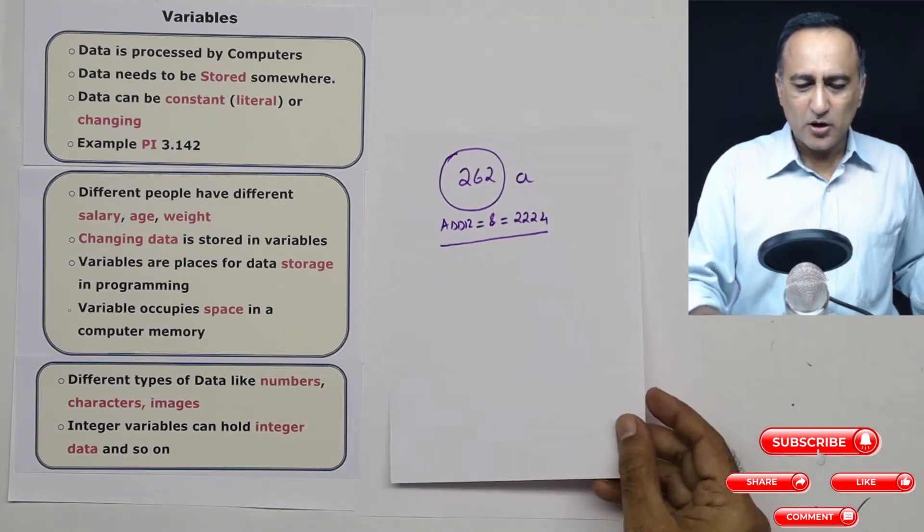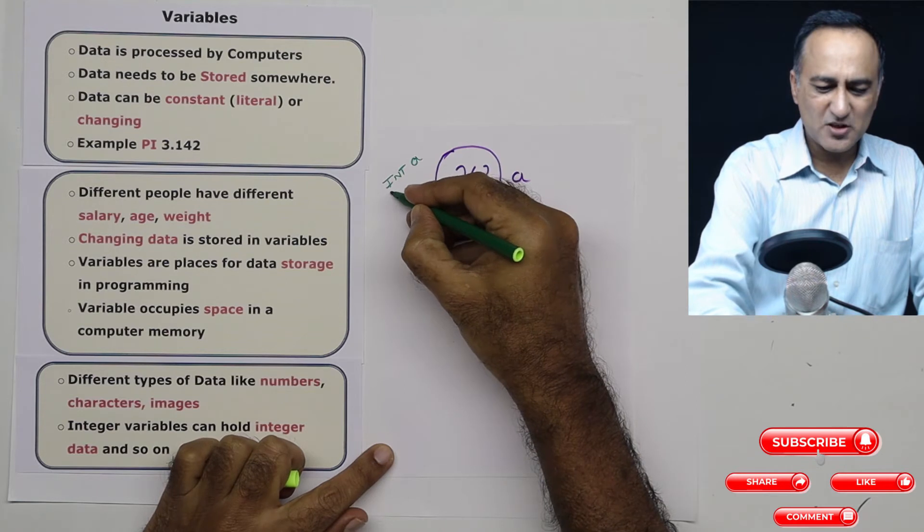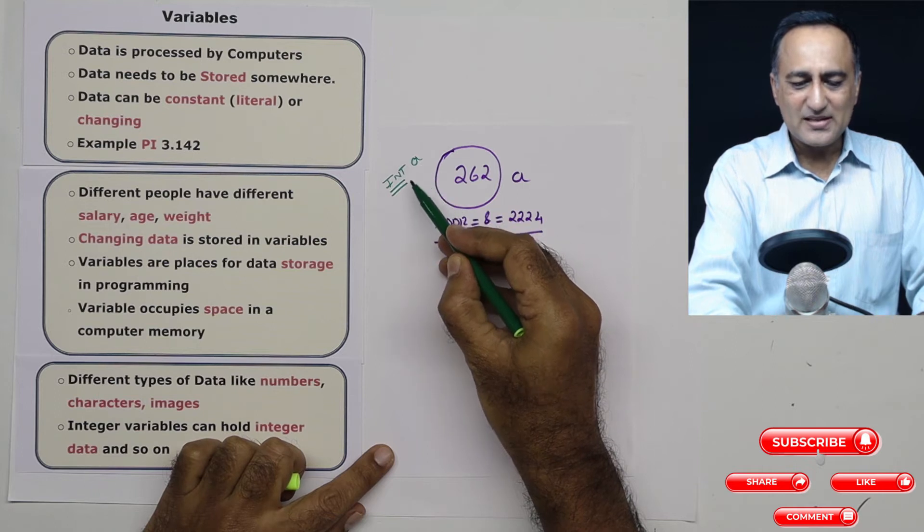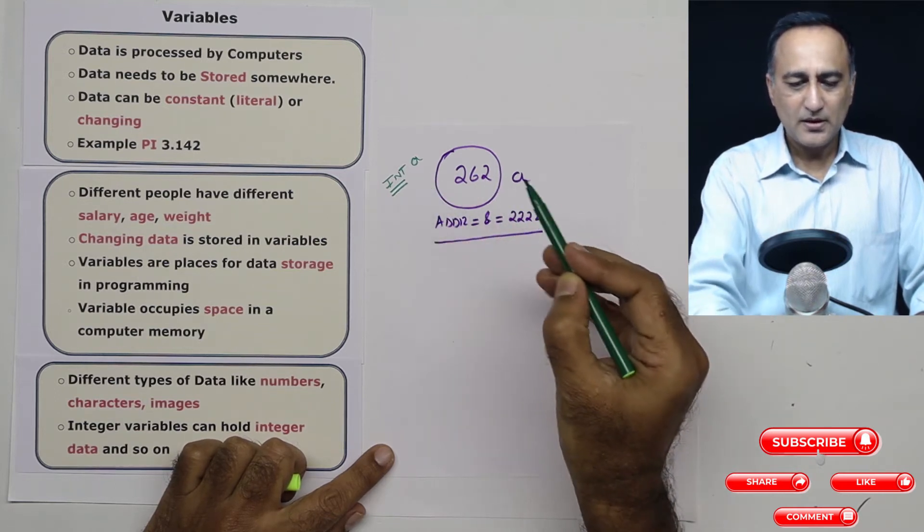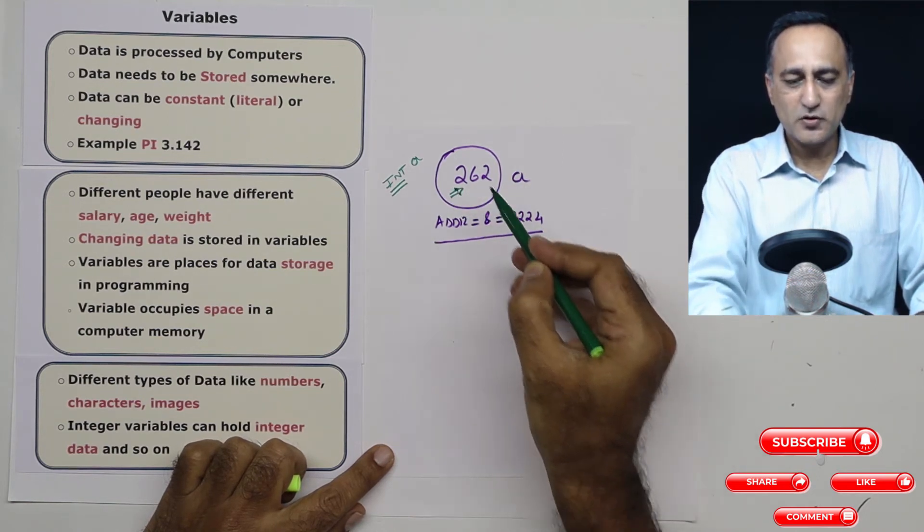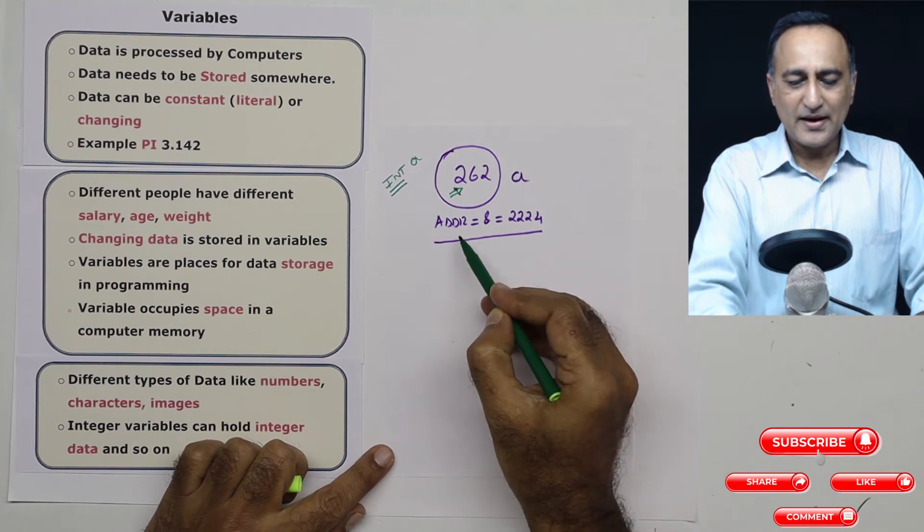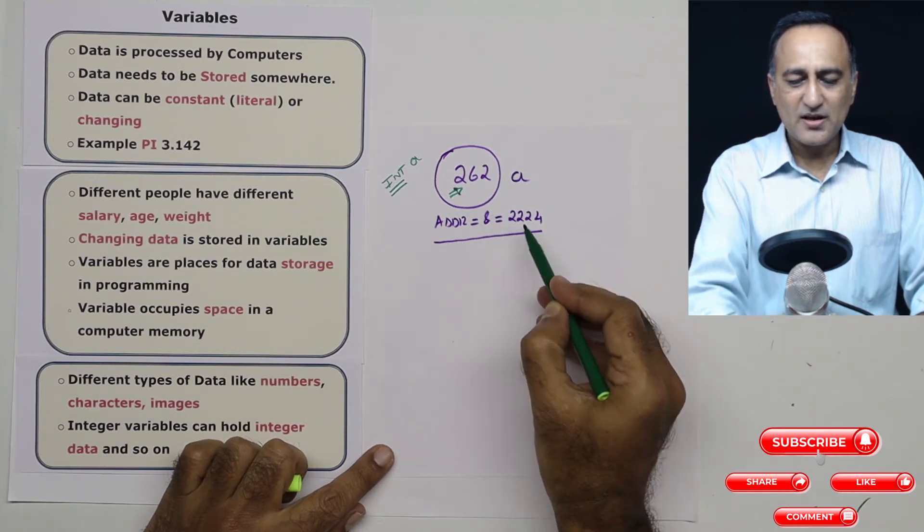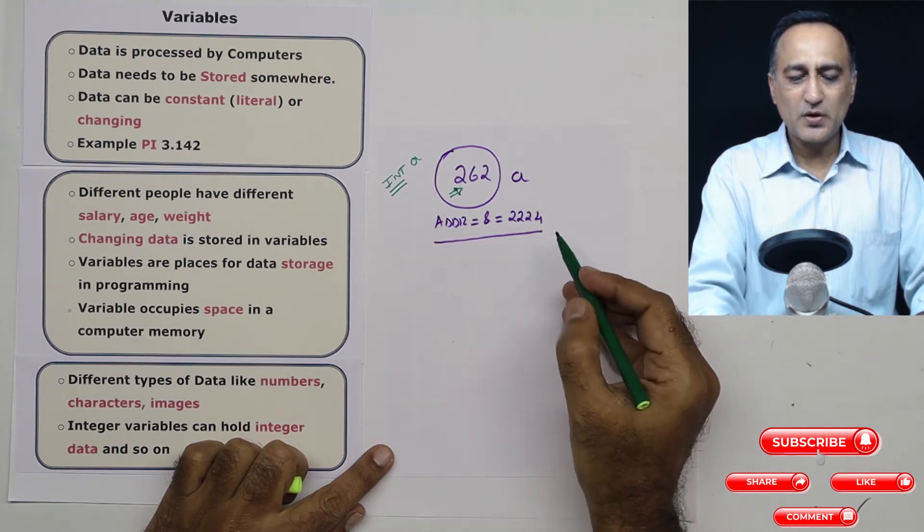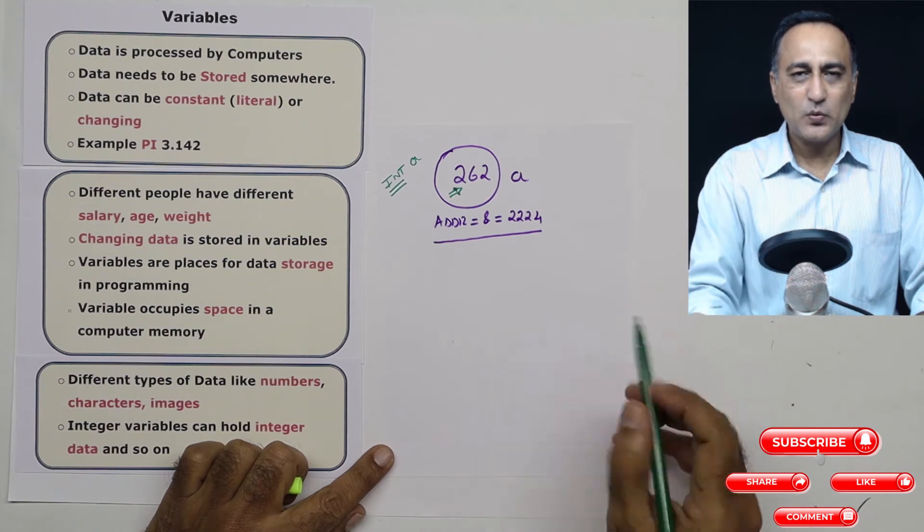So let's take a look at a small diagram. Suppose I have a declaration like this, I say int a. When I say int a, it tells me a is a type of integer variable. Let's say I read in a value of 262 from the keyboard. So its value is 262. Name of the memory location is referred to by a. The address of this particular memory location, let's assume it is 2224. So there are a few things associated with a variable. One is a name, one is a type, one is a value, and one is the address of a variable.